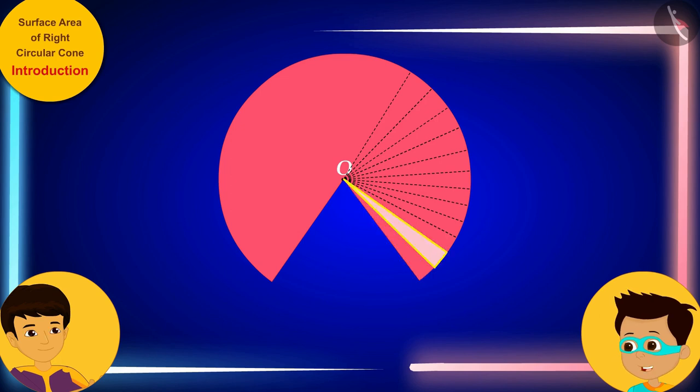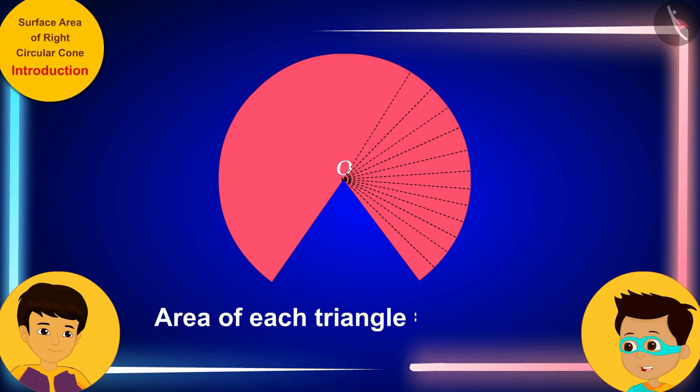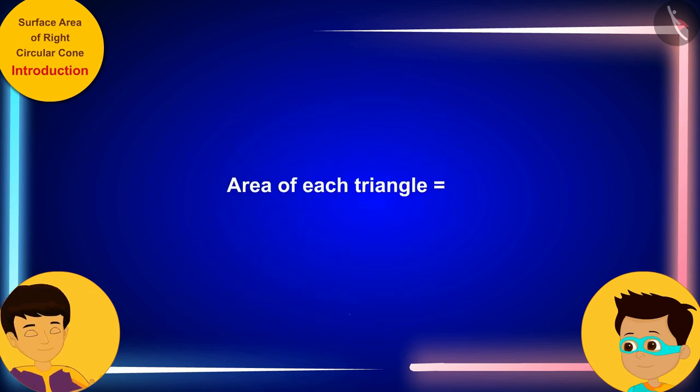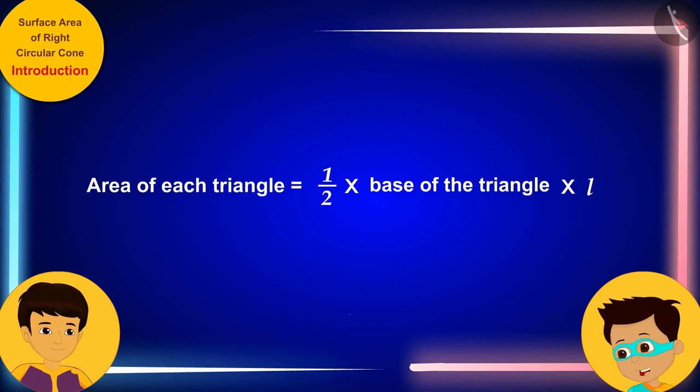Look, Manas, each piece is in the shape of a triangle. So, can you tell me the area of each triangle? The area of each triangle will be one by two times its base multiplied by the height, which is L here. Well done!